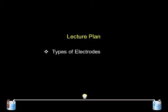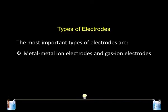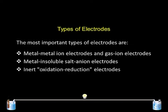In this lecture, we will talk about types of electrodes and concentration cells. We have different types of electrodes. The reference electrode already discussed is the standard hydrogen electrode. We will also talk about liquid junction potential. The most important types of electrodes are: first, metal-metal ion electrodes and gas-ion electrodes; second, metal insoluble salt anion electrodes; third, inert oxidation-reduction electrodes and membrane electrodes.